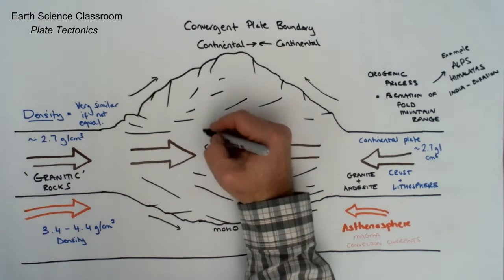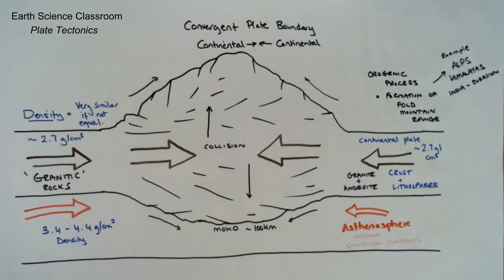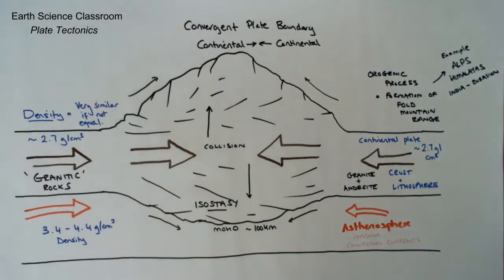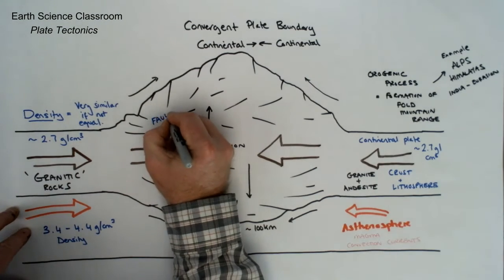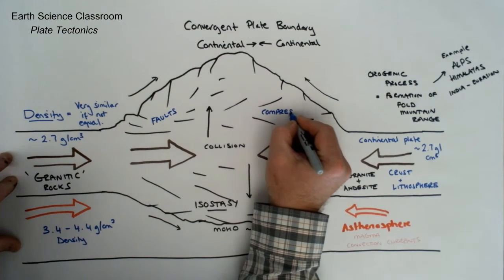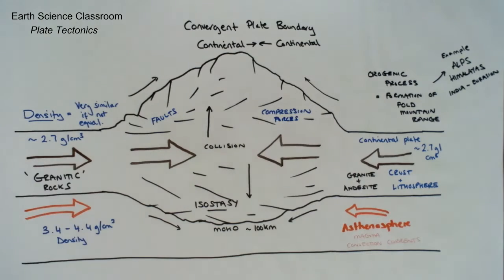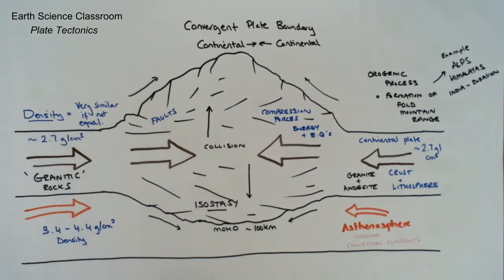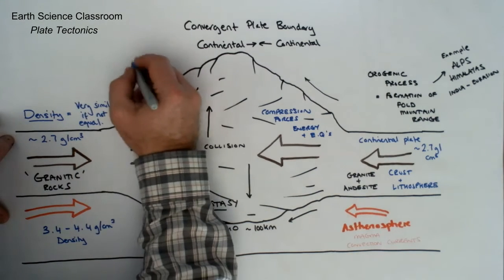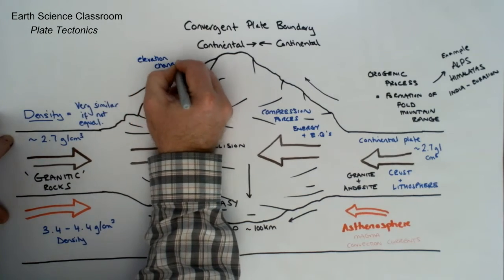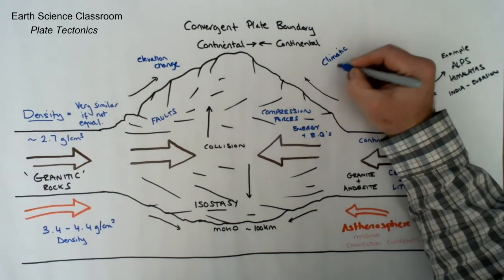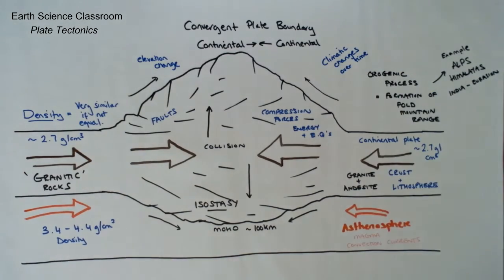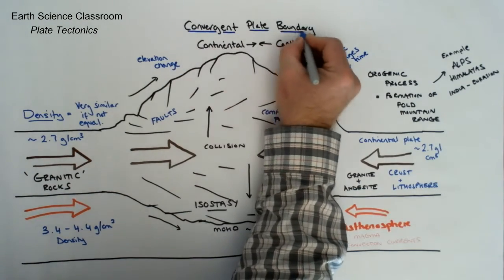Here you see the Moho — the boundary between the plate and the asthenosphere, defined by the change in velocity of earthquake waves — with a depth of around 100 kilometers max before going into the asthenosphere. Inside the mountain range, you have folded mountain layers, rock combinations, and compression faults, causing lots of earthquakes. The elevated mountains also create changes in climate over long periods of time, change river courses, and can even create rivers like the Ganges from the formation of the Himalayan mountains.